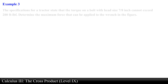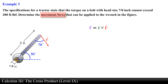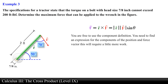Let's go over the final example. The specifications for a tractor state that the torque on a bolt with head size 7.8 inches cannot exceed 200 foot-pounds. Determine the maximum force that can be applied to the wrench. We will use the geometric definition of the cross product since we are given the magnitude of the position vector and various angles. You are free to use the component definition as well — you just need to find expressions for the components of the position and force vectors.